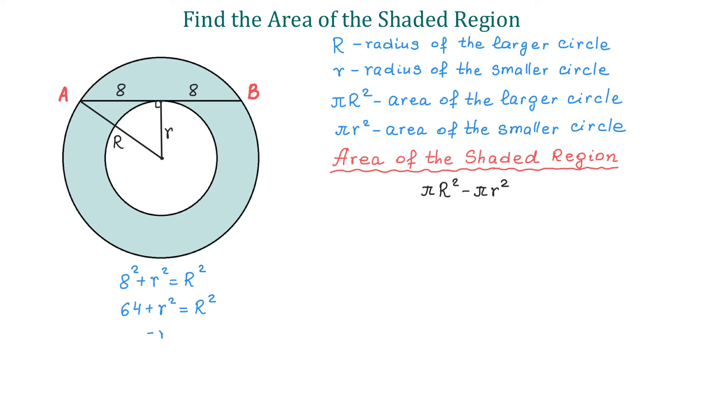Then we subtract lowercase r² from both sides, and we have 64 = R² - r². Now, in the expression to the right that represents the area of the shaded region, let's factor out π.